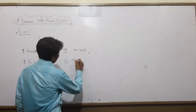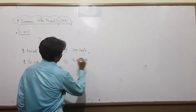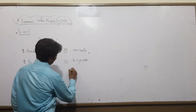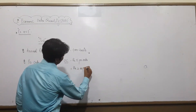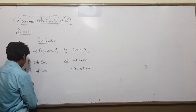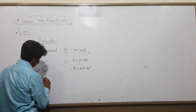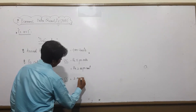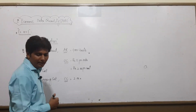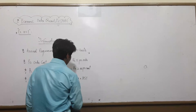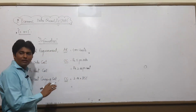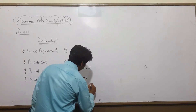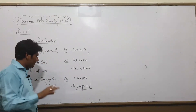Per unit cost is ₹2 per unit. Then we write per unit carrying cost (CC). Since carrying cost is given as 25%, we apply this percentage to the per unit cost: 25% of ₹2 = ₹0.50 per unit. This means it costs 50 paise to carry one unit. So CC = ₹0.50 per unit.